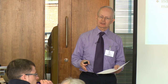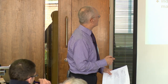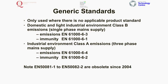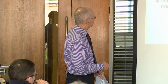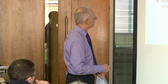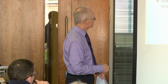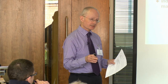So if the sort of things that you're manufacturing are household appliances, you'll look at 55014; lighting equipment, 55015; if it's IT, it'll be 55022; medical equipment, switchgear, measurement control, telecoms, radio — those are all product standards and they cover everything that needs to be tested.